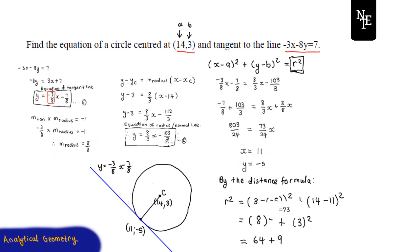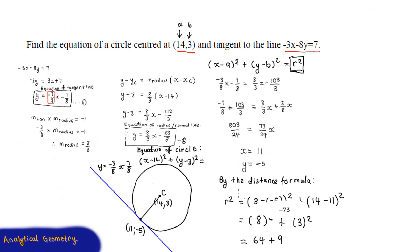So we can finally write the equation of the circle: (x - 14)² + (y - 3)² = r², which is equal to 73. There you go.